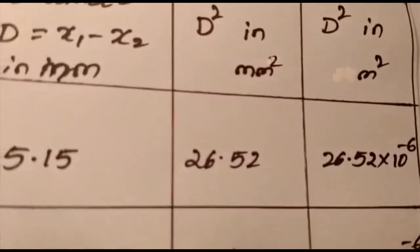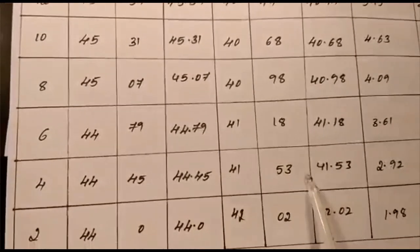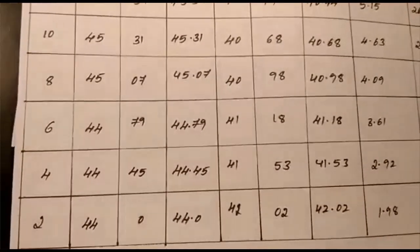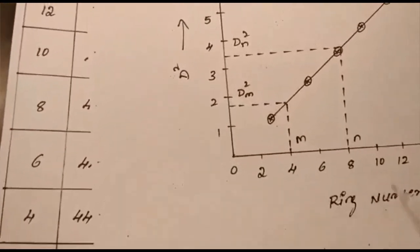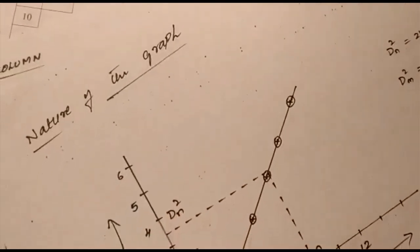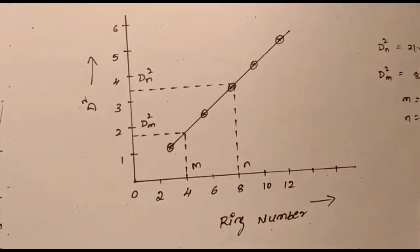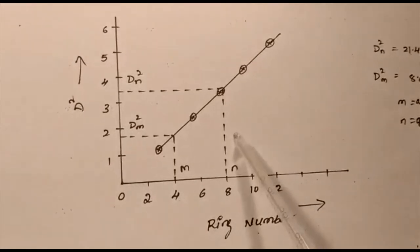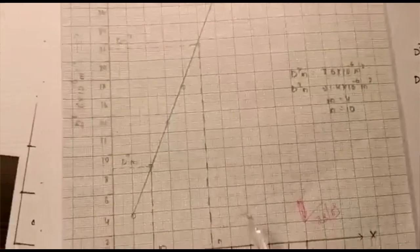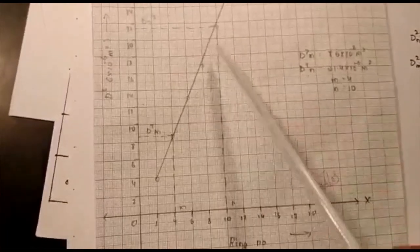Once you have complete readings for ring numbers 12, 10, 8, 6, 4, and 2 on both left and right sides and all calculations are done, you need to plot a graph of ring number versus D². In the model graph, ring number is on the X-axis and diameter squared is on the Y-axis. Plotting the points gives a straight line.